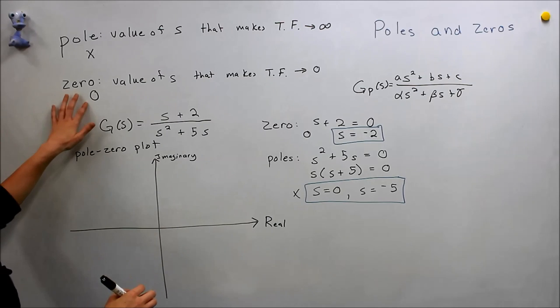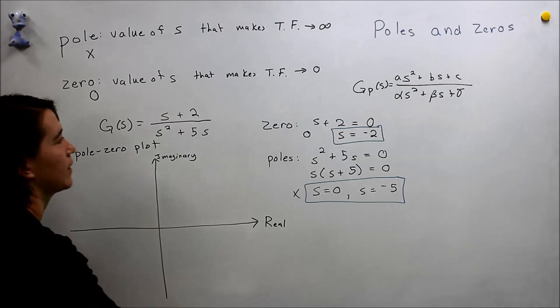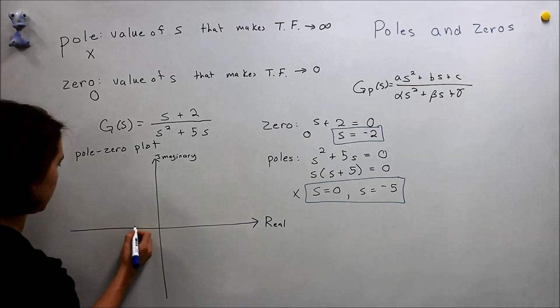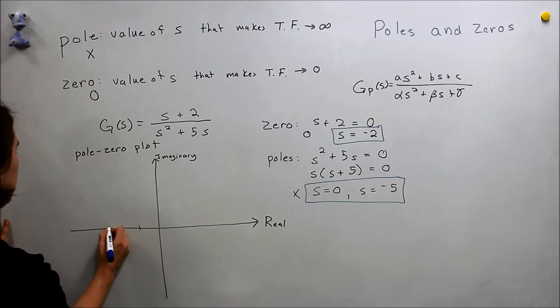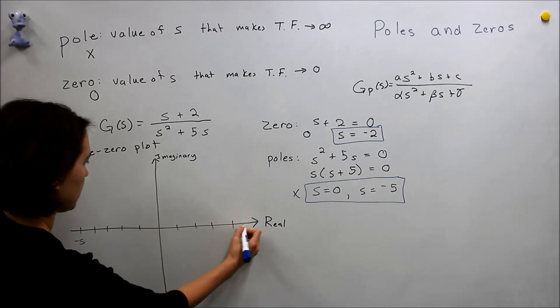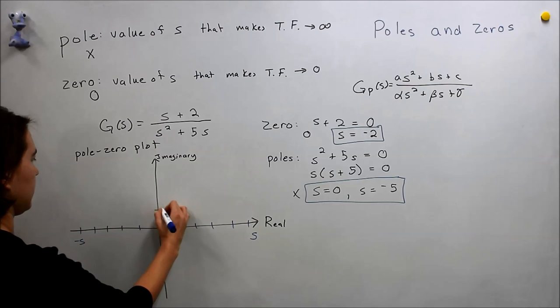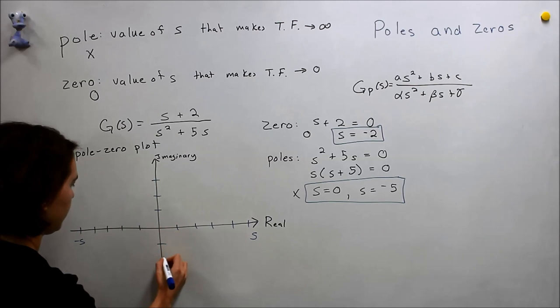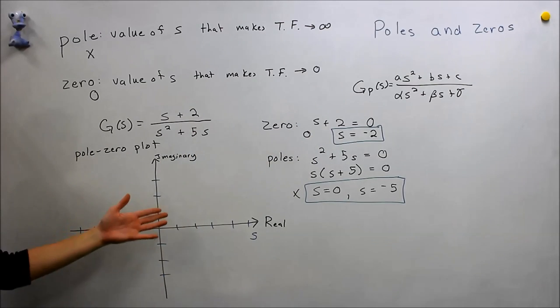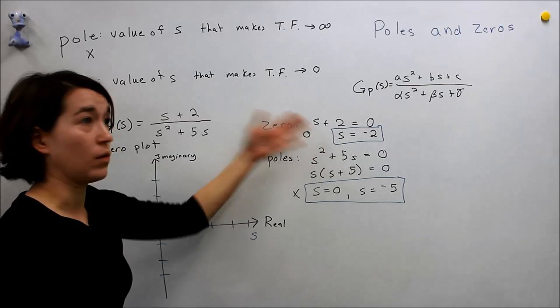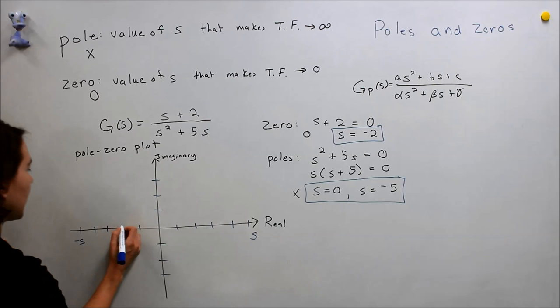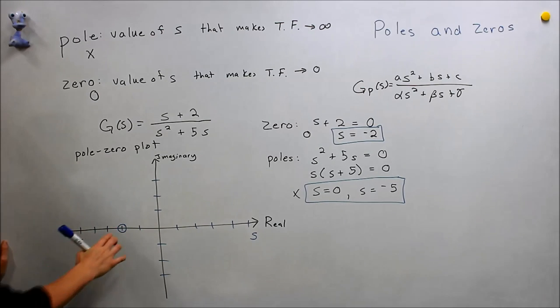So we have a zero at negative two. So we'll say this is, so here is negative five, five here and about the same here. Okay? So we have negative two is one of our zeros. There's no imaginary component, it's all real. So we stay on the real axis and we go to negative two and we put a circle. So that's our zero at negative two.